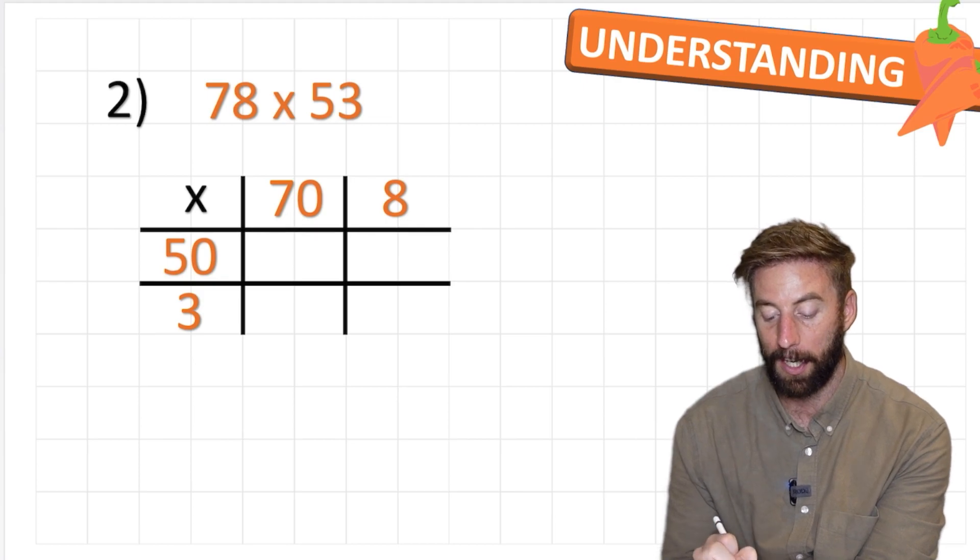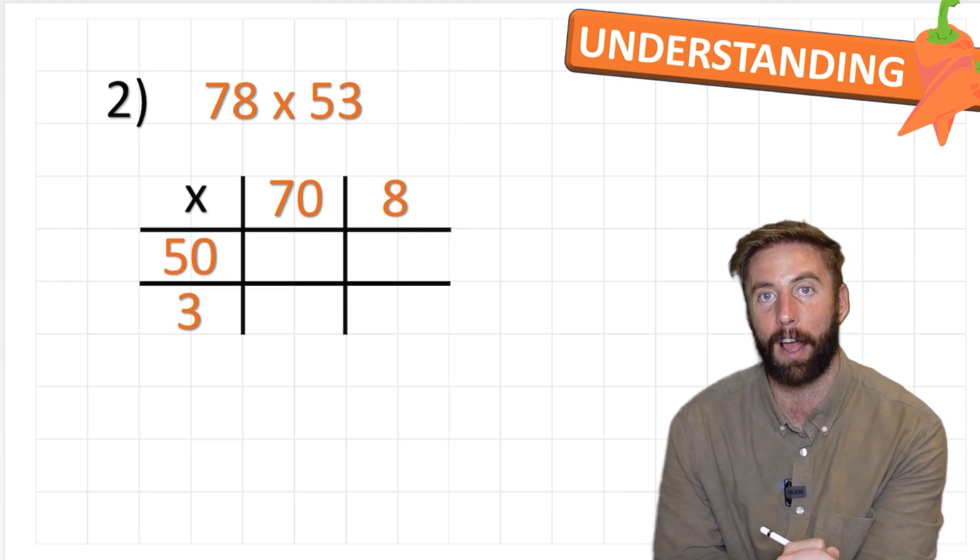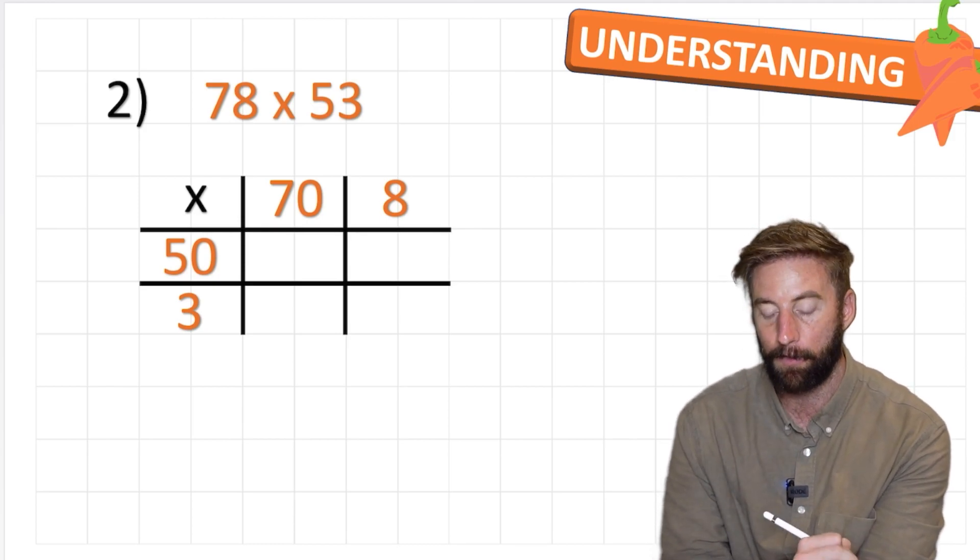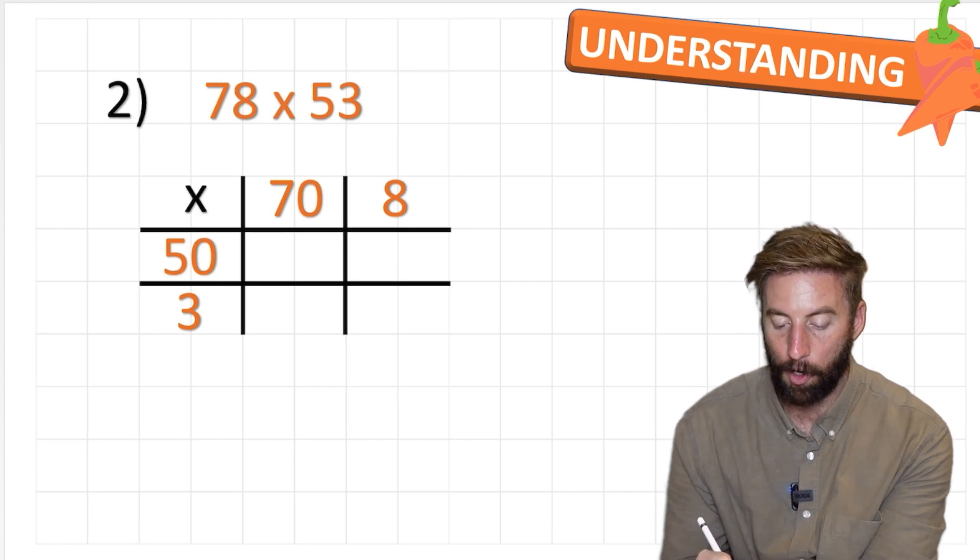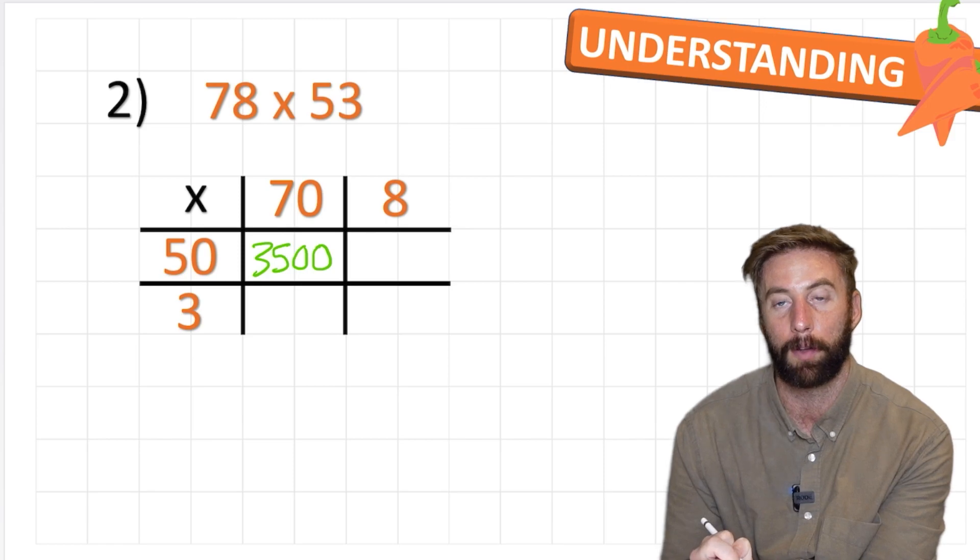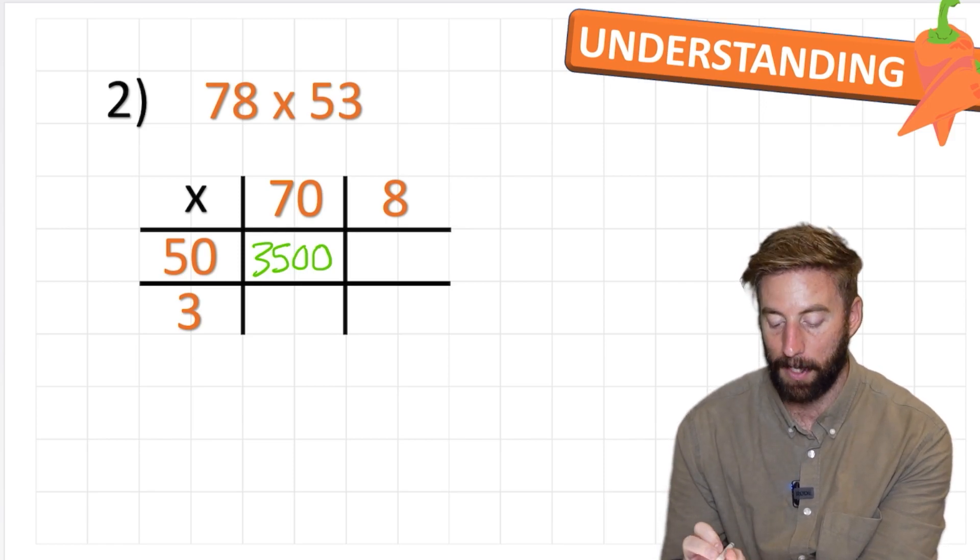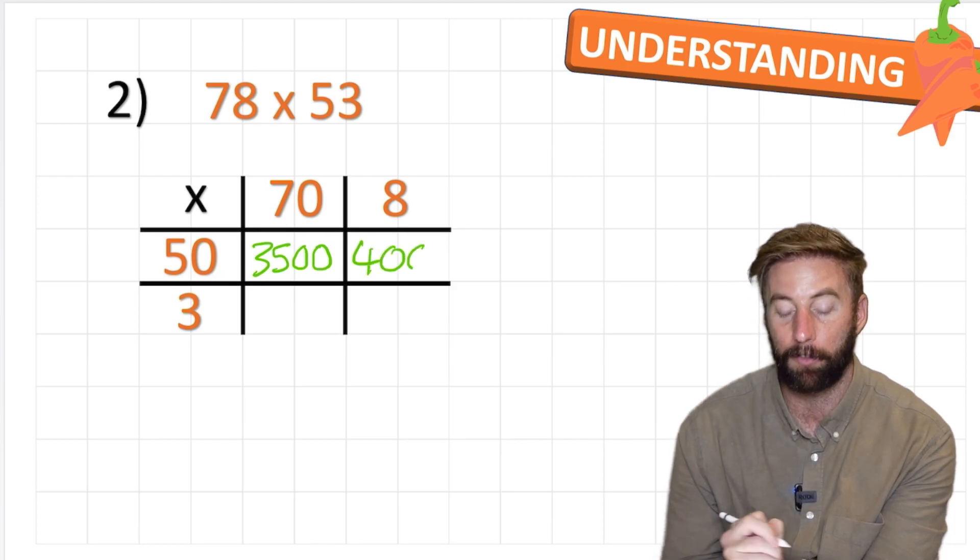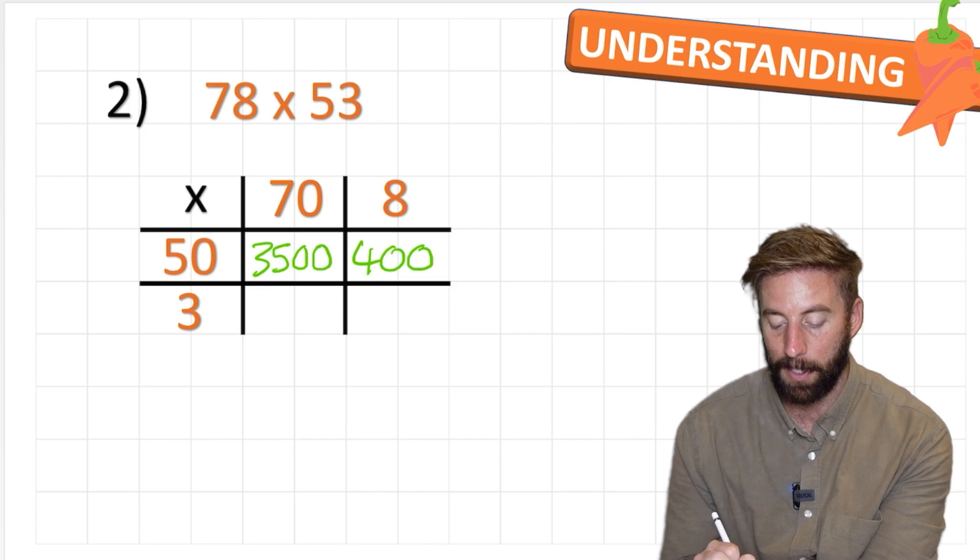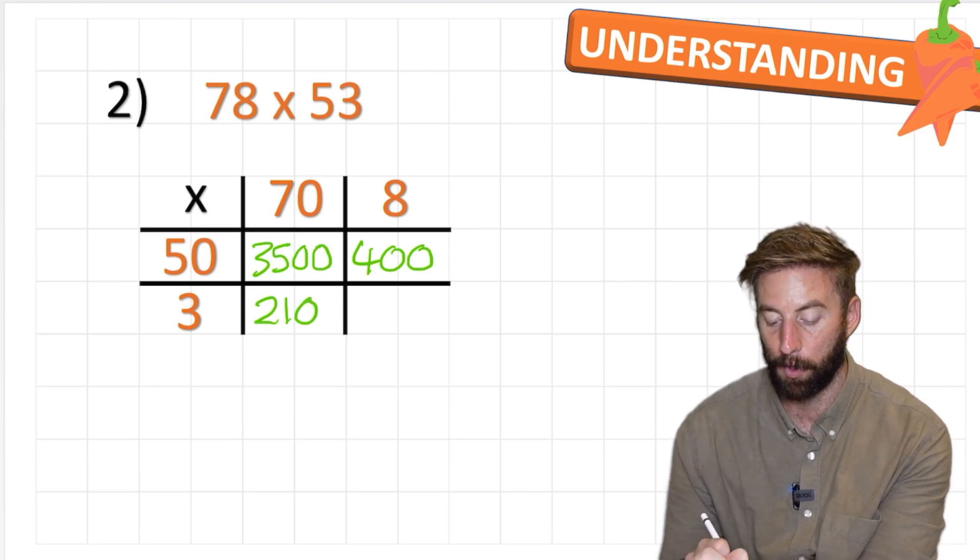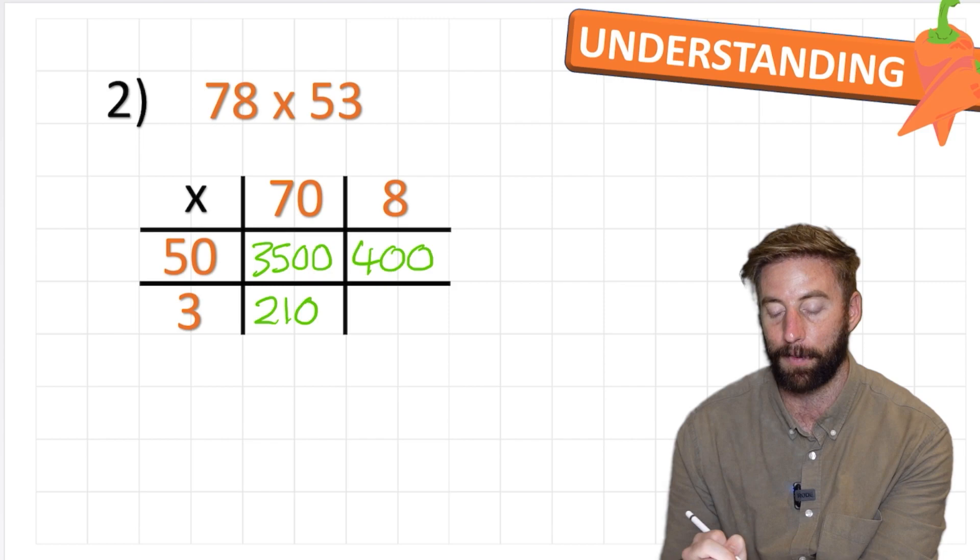So the first question is 50 times 70. I'm going to make it 100 times smaller and work out 5 times 7. 5 times 7 is 35. Put back my two placeholders. Next question: 50 times 8, so 5 times 8 which is 40. Put back my placeholder: 400. 3 times 70, so 3 times 7 is 21. Put back my placeholder. And then last: 3 times 8 is 24.